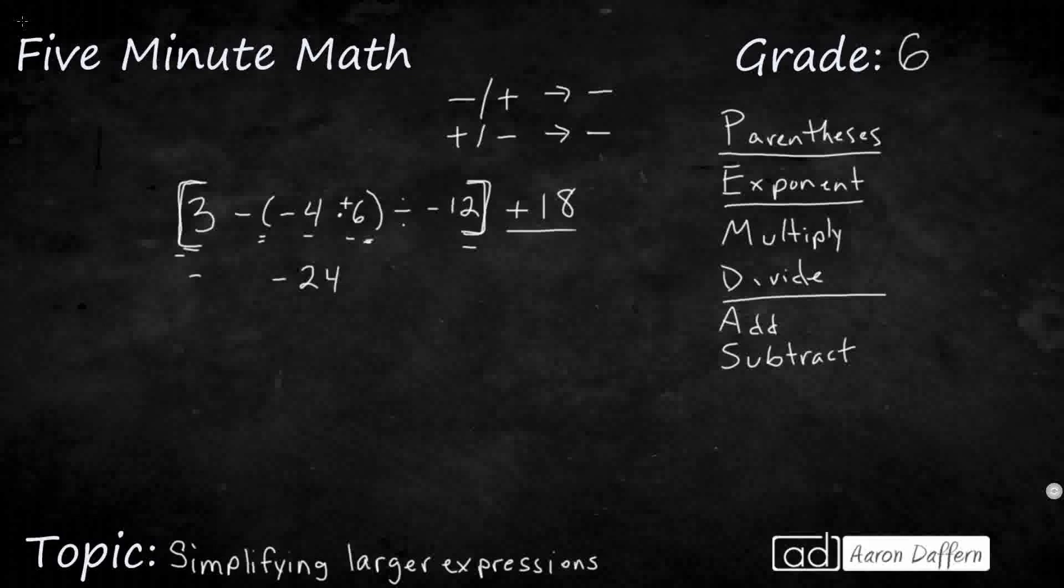So let's rewrite. We'll go ahead and keep that bracket there. Now that's why we have this parentheses, right? 3 minus negative 24. That just looks weird. So we put a parentheses there just to separate the two negatives. We still have to divide by negative 12, and then the plus 18 is just waiting at the end.